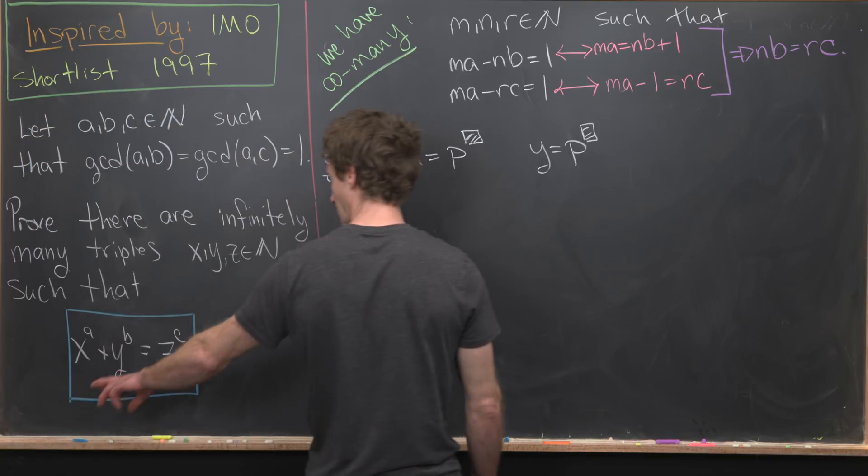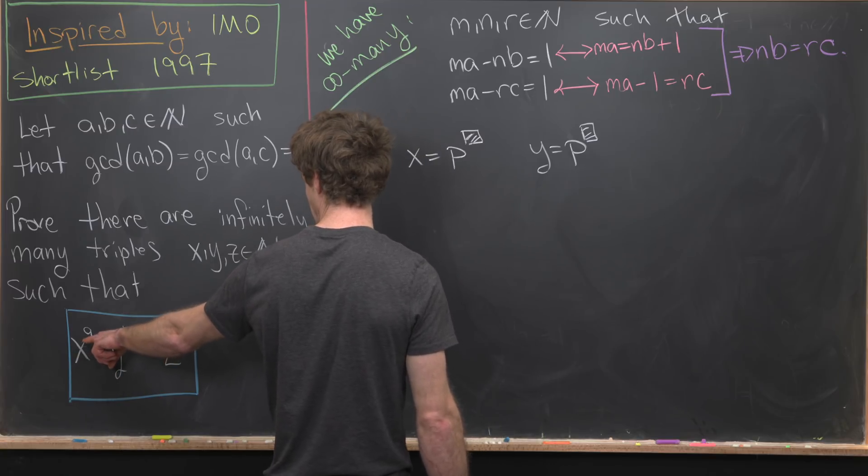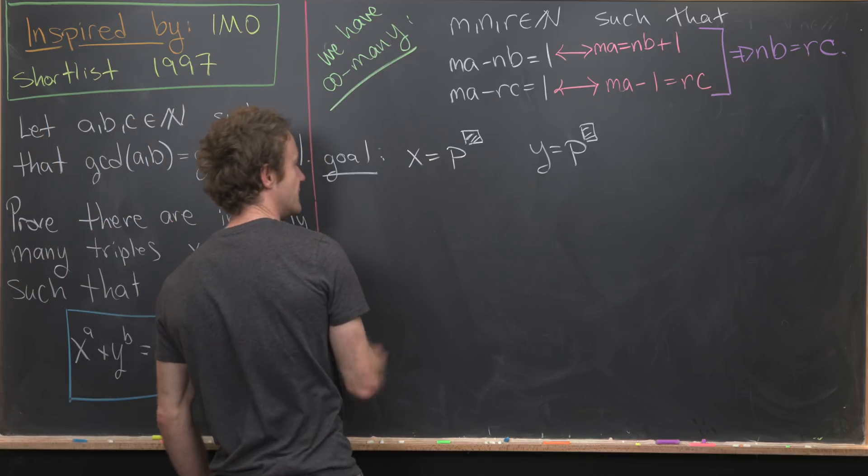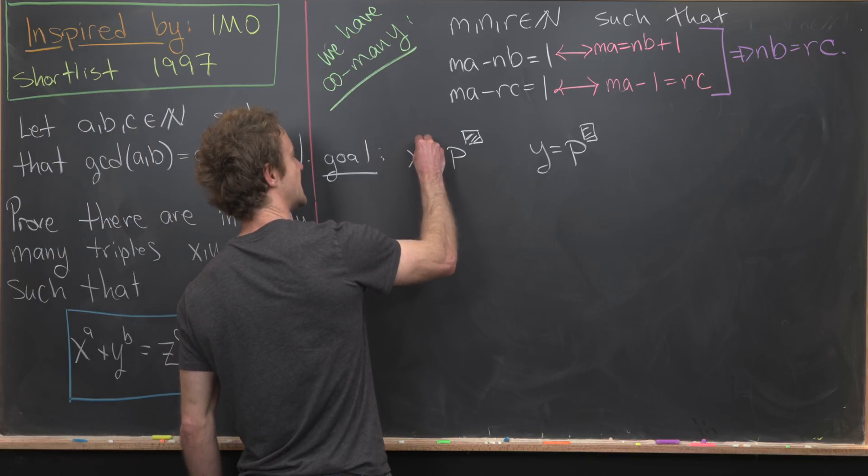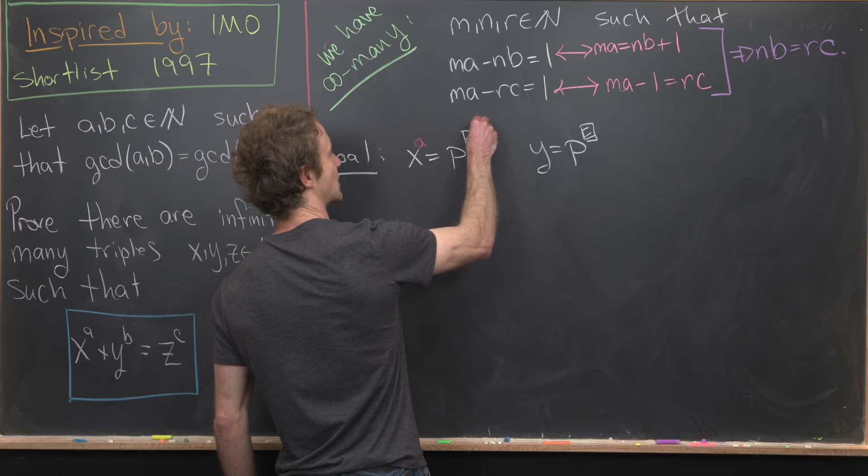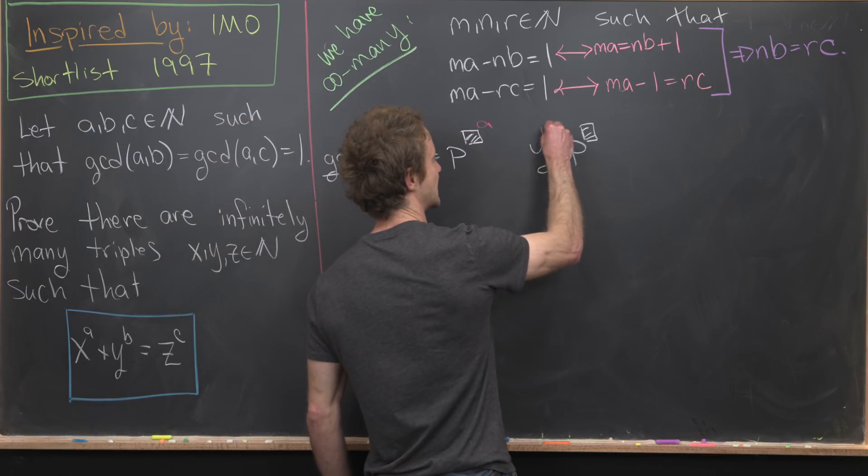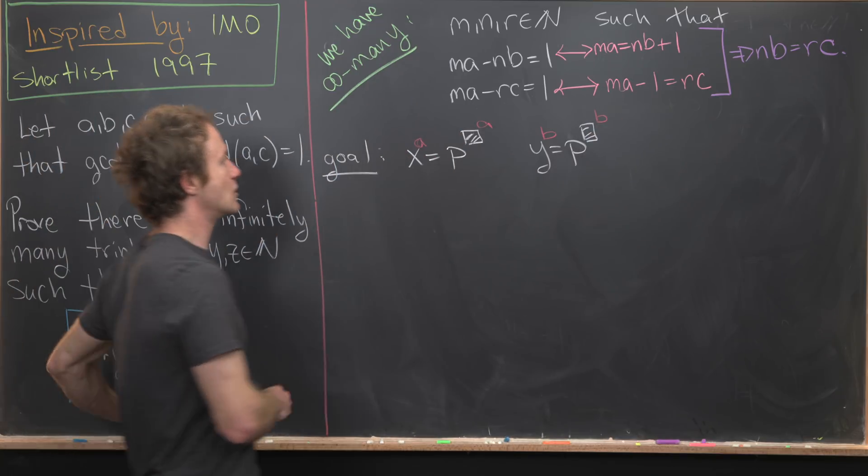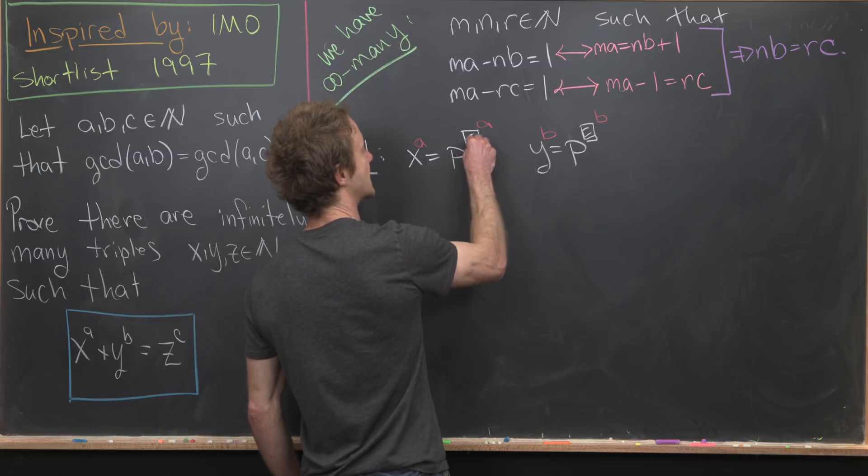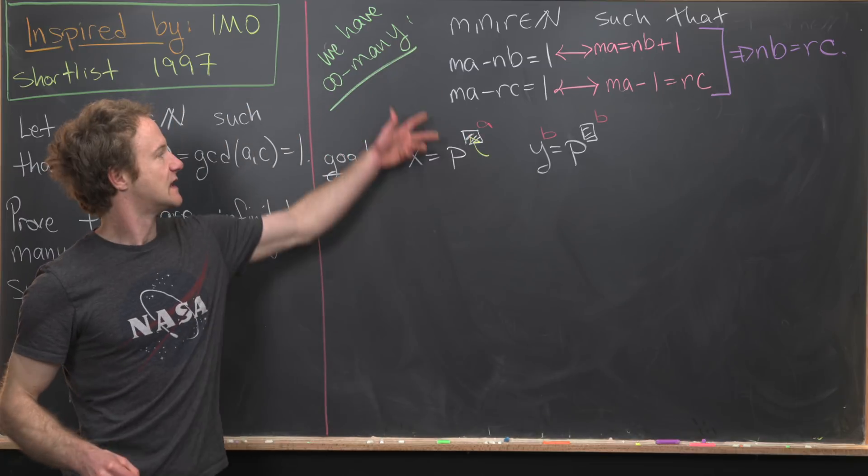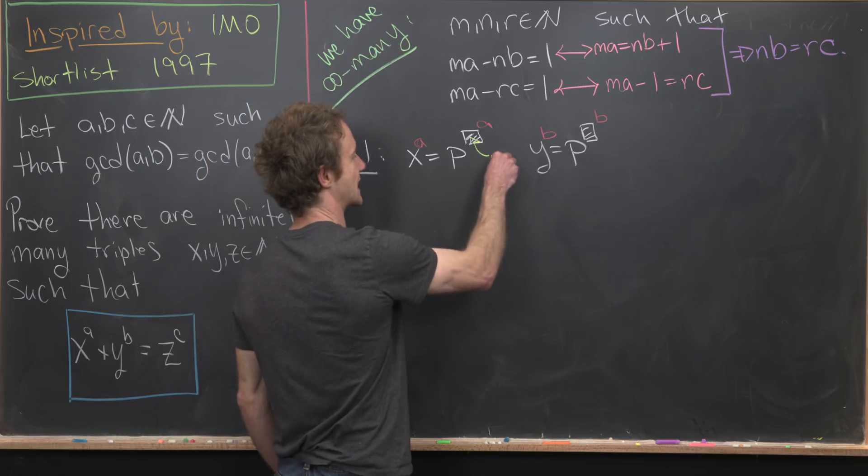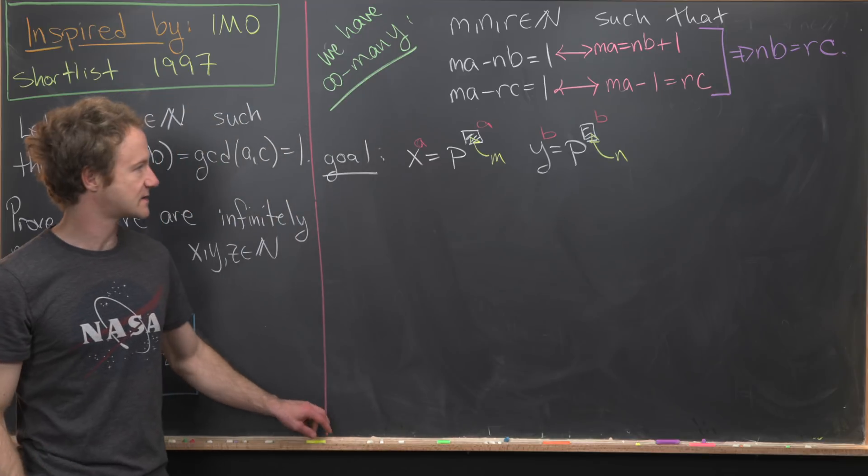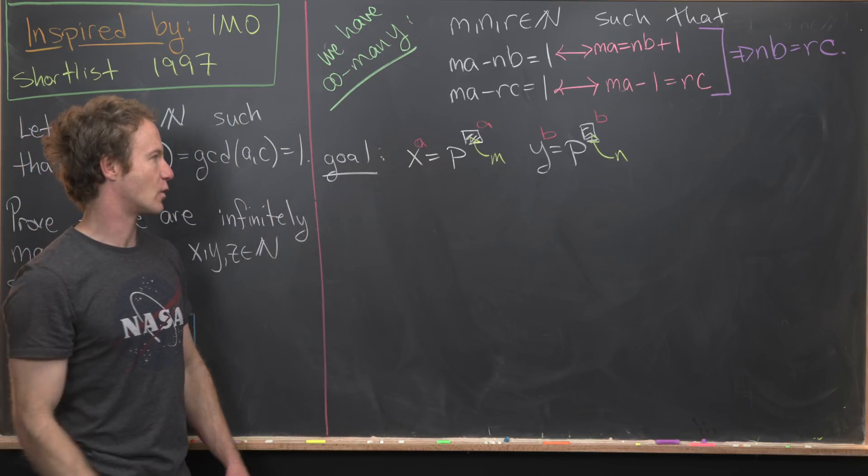And now looking back at our original equation, we see that we have X to the A and we have Y to the B. So that really provides us some motivation, since we're exponentiating this to A, that means we're exponentiating this to A, we're exponentiating this to B, that means we're exponentiating this to B. Now we've got some motivation for what we should plug into these boxes, given these equations up here. So perhaps we should plug an M into this box, and perhaps we should plug an N into that box.